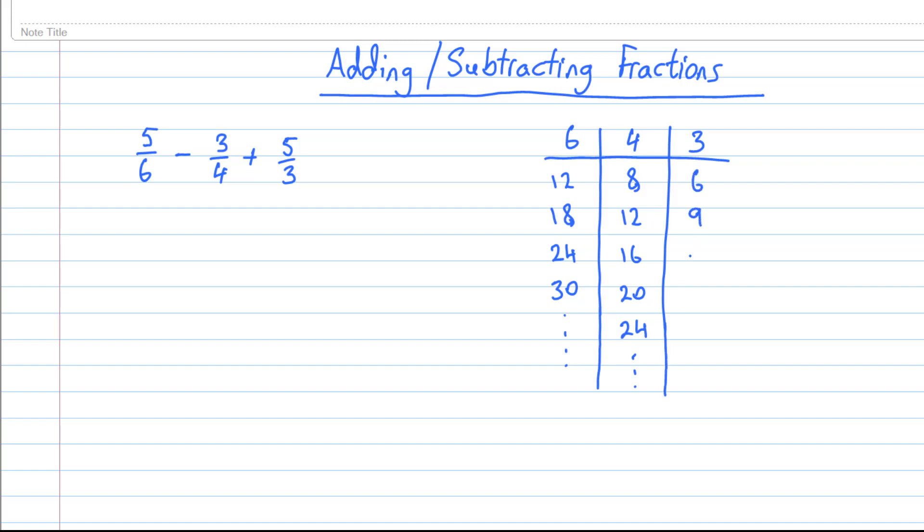So what we have to do is look in each of these three columns, and then the smallest number that's common to all of the columns is the number that we're going to use as the lowest common multiple or common denominator.